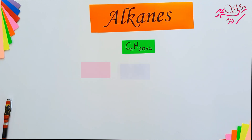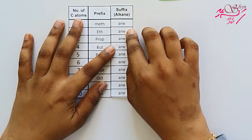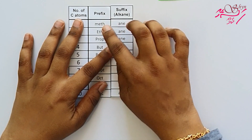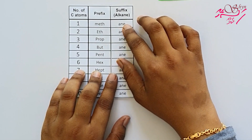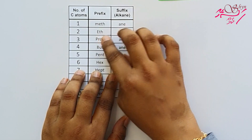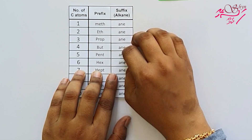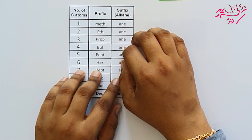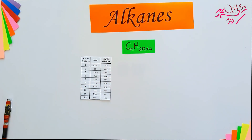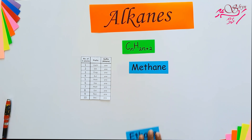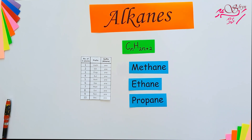Let's try and name the first four alkanes. Pause the video and try it for yourself first. The names of the first four members are methane, ethane, propane, and butane.